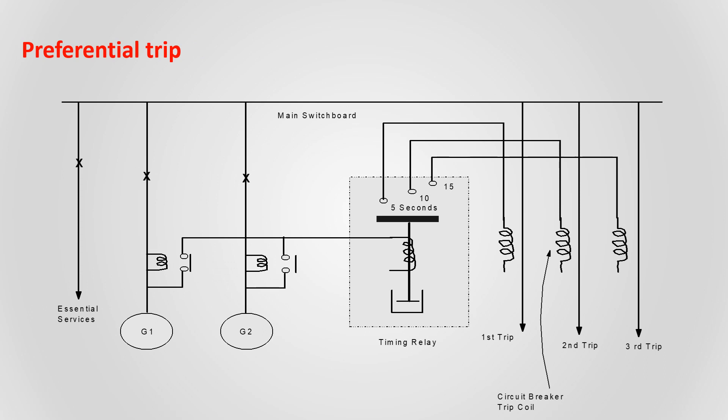Preferential trip can be tested either by primary current injection method or secondary current injection method. This trip arrangement is for an overload of generator, so we are applying a current injection method for testing this preferential trip.